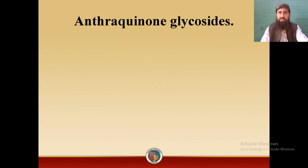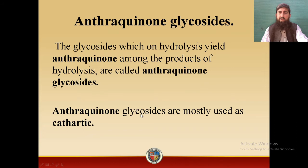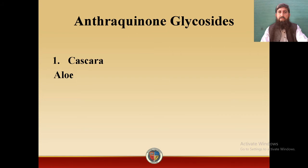First of all, we will define Anthraquinone Glycosides. The glycosides which on hydrolysis yield anthraquinone among the products of hydrolysis are called Anthraquinone Glycosides. It means that the aglycone part in Anthraquinone Glycosides is anthraquinone. Anthraquinone Glycosides are mostly used as cathartic. Cathartic agents are those which have the property of laxative and purgative.